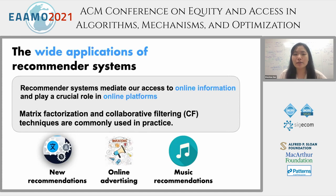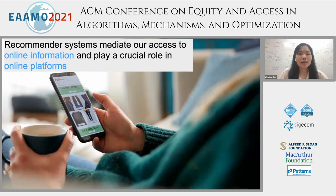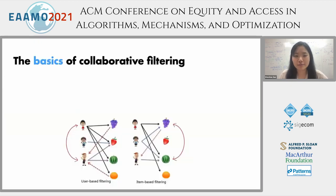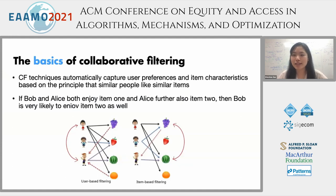Given these wide applications, we really need to care about whether they are actually fair and diverse to different types of users. I will start with some basics of the collaborative filtering technique. In general, collaborative filtering basically tries to capture user preferences and item characteristics based on the principle that similar people might like similar other items.